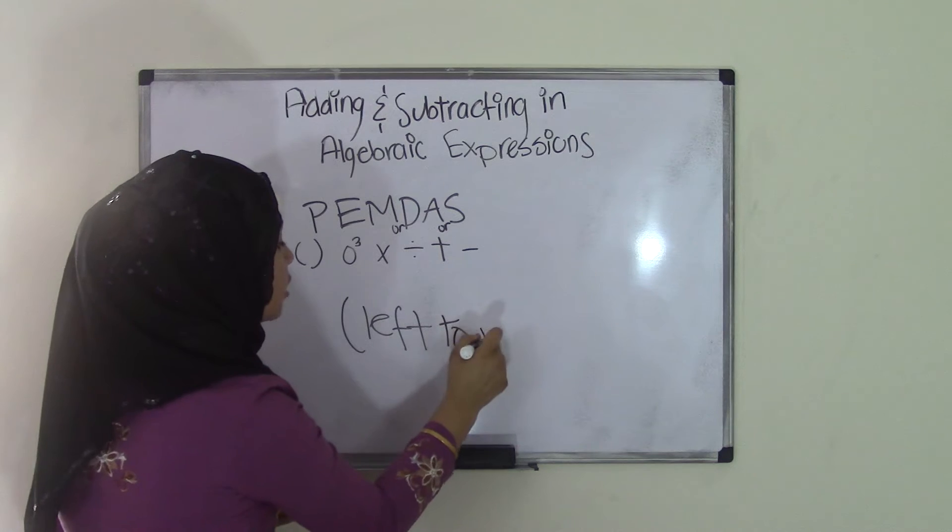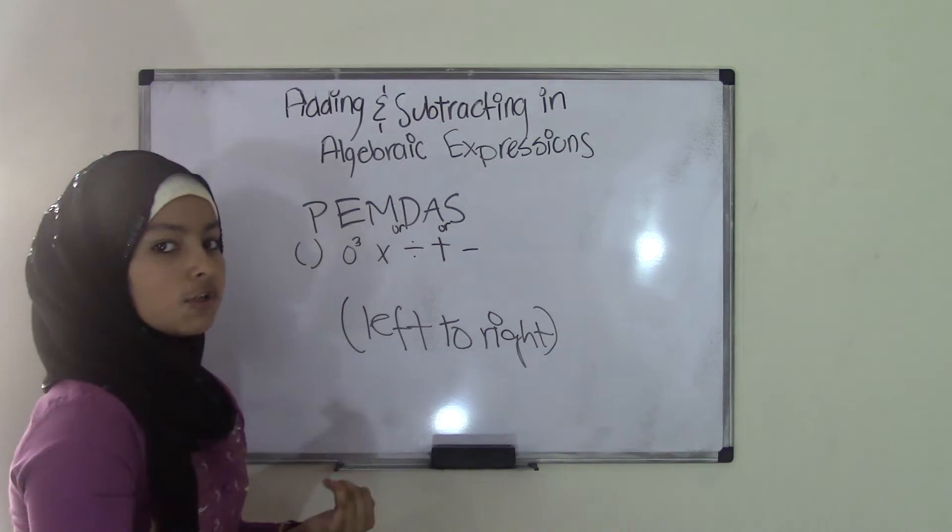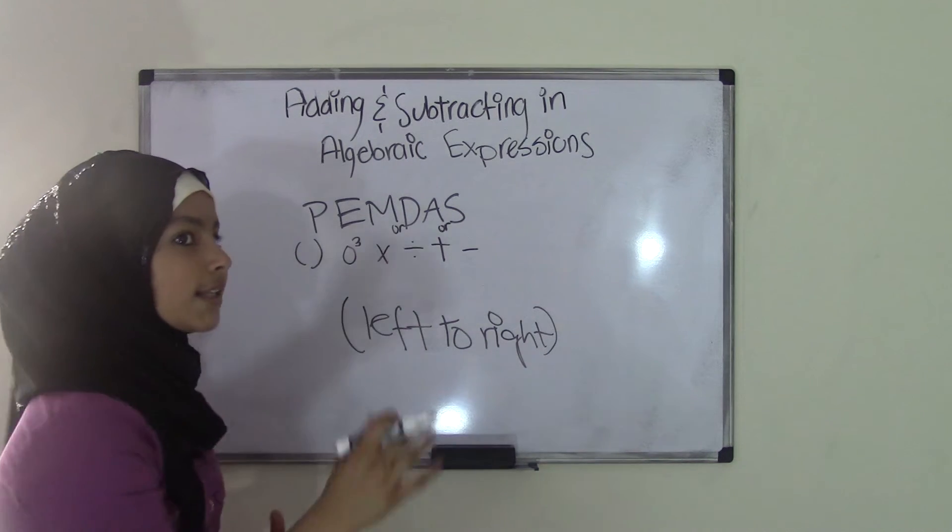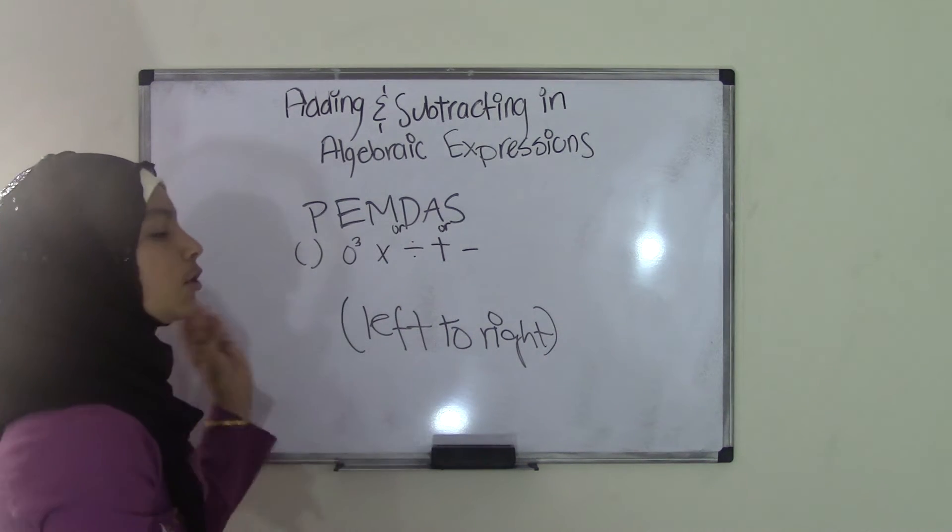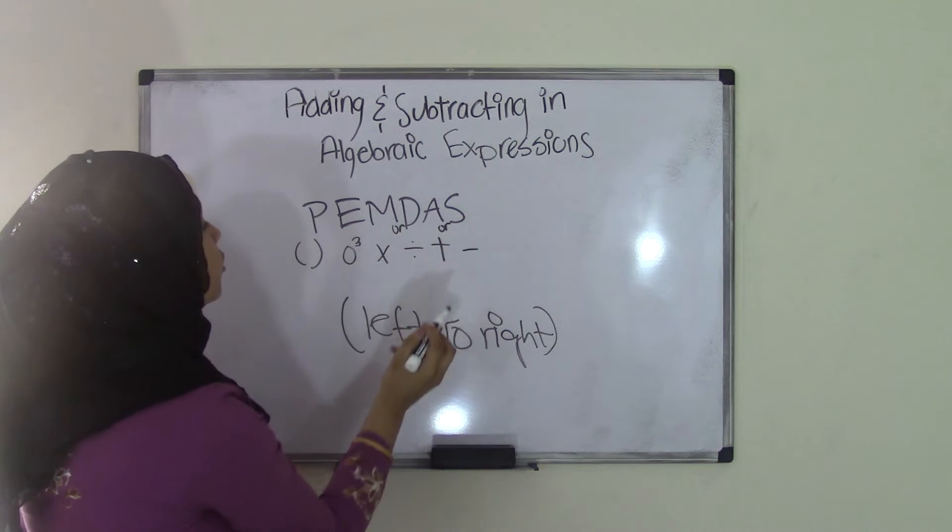So left to right. Whatever comes first, you'll do it. So if it's division first, then go ahead and do it, because it's from left to right. Because if you were to do multiplication first and skip that division part, then that would change your answer and that would become wrong. So remember, it's multiplication or division and addition or subtraction.